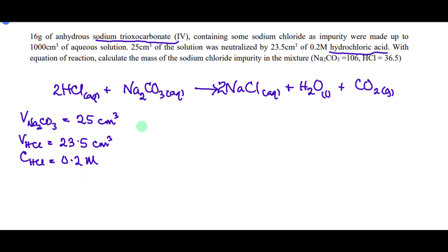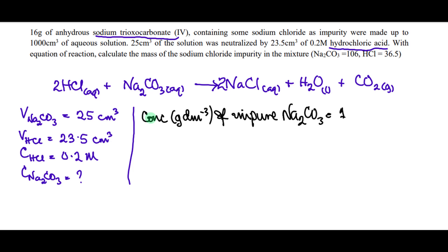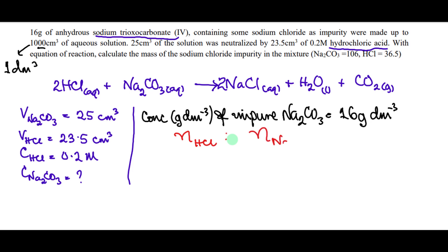The concentration of the acid is 0.2 mol/dm³. The concentration of the pure base is not directly given; instead we are given the concentration of the impure Na₂CO₃ as 16 grams dissolved in 1000 cm³ (i.e., 1 dm³), which is 16 g/dm³. The mole ratio of acid to base from the equation is 2:1.